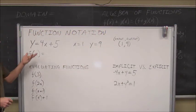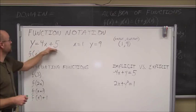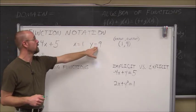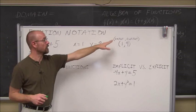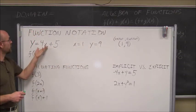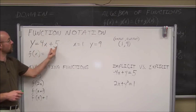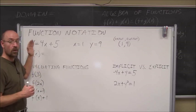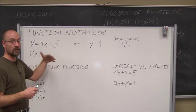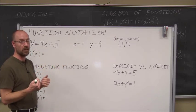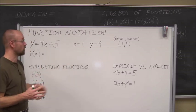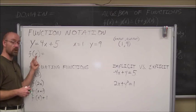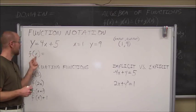Let's talk about function notation. We should be familiar with seeing equations like y equals 4x plus 5, and we can always find values. If x equals 1, y equals 9 — our input is 1 and our output is 9. 4 times 1 is 4, and 4 plus 5 is 9. When we're talking about function notation, how do we distinguish between this line and some other line? We use something called function notation. f of x basically says my input is x and my output is the result of that. x is called our argument.